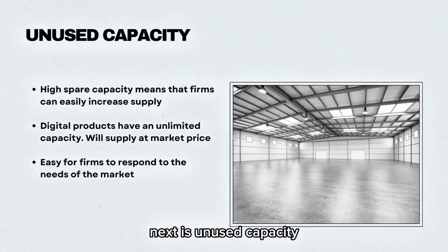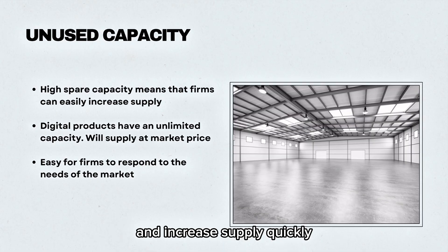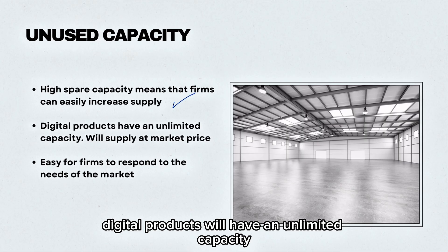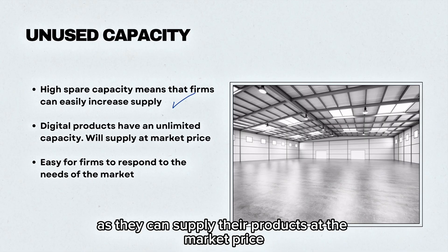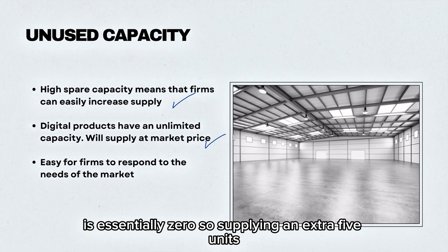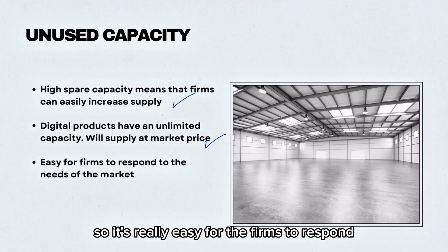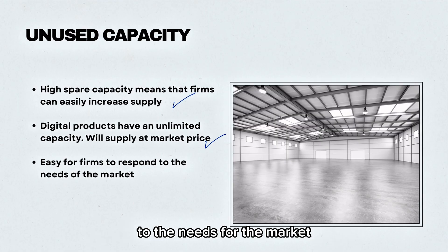Next is unused capacity. High spare capacity allows firms to utilise this space and increase supply quickly. Digital products will have an unlimited capacity, as they can supply their products at the market price. The reason is that the cost to supply an additional product is essentially zero, so supplying an extra 5 units or 5,000 units is exactly the same, making it very easy for firms to respond to market needs.